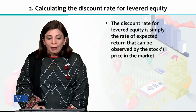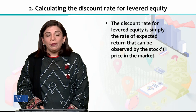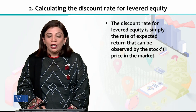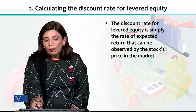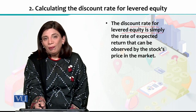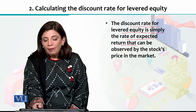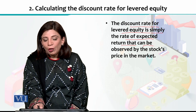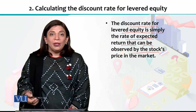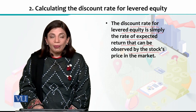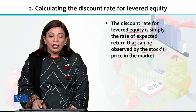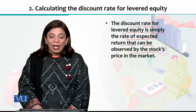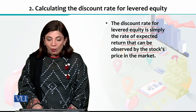Once you have the levered cash flow, the next step is to calculate the discount rate for levered equity. The discount rate for levered equity is simply the rate of expected return that can be observed from the stock price in the market. The stock price is available in the market, and that information gives you a measure of the discount rate of levered equity.